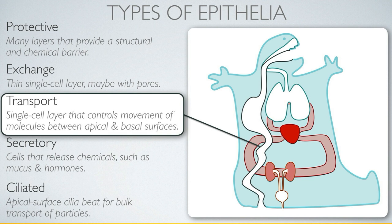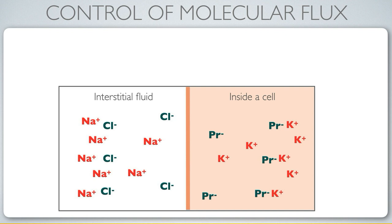Let's focus in on a cellular membrane. On the right-hand side we have the interior of the cell — we can see that it has a high concentration of potassium — whereas on the outside of the cell we have a high concentration of sodium.